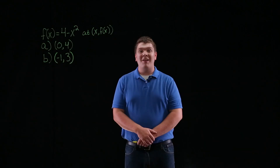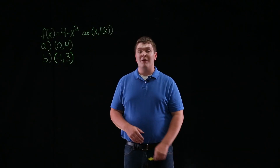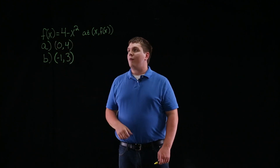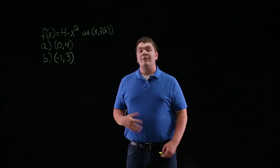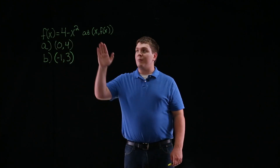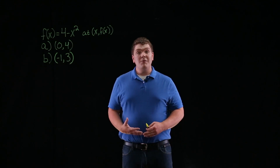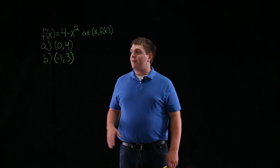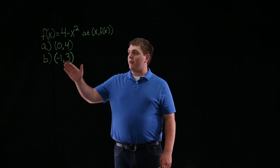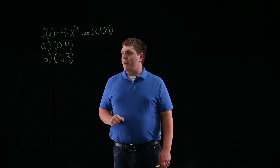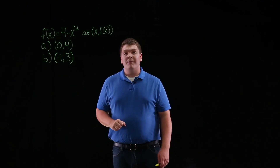Hi, my name is Gabe. For this problem, we're asked to write a formula which represents the slope of the graph of the function 4 minus x squared at the arbitrary point x, f of x. Then we're going to use this formula to find the slope of the graph at the point 0, 4 and negative 1, 3.